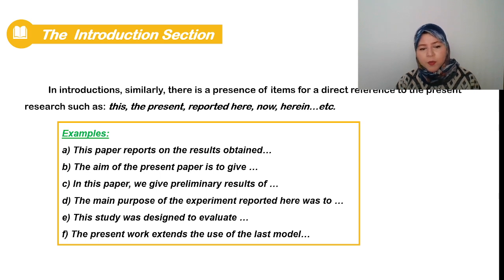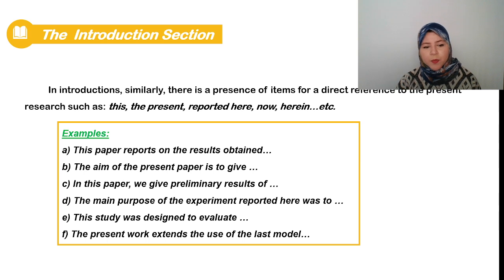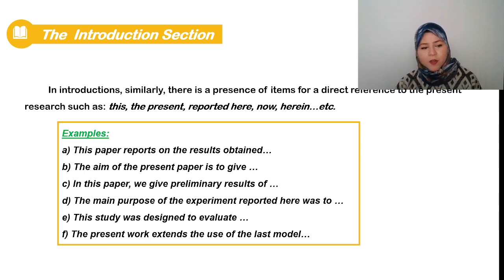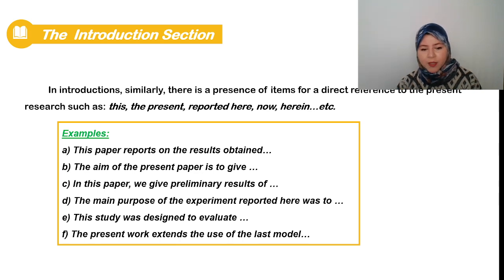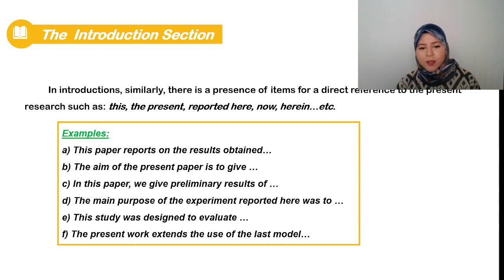Examples of phrases signaling present research: 'This paper reports on the results obtained'; 'The aim of the present paper is to give'; 'In this paper we give preliminary results — the main purpose of the experiments reported here was to'; 'This study was designed to evaluate'; and 'The present work extends the use of the last model.'